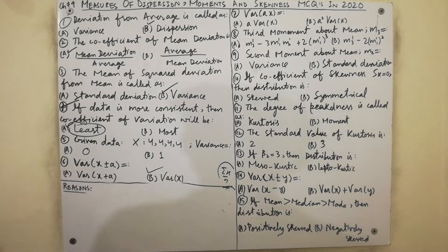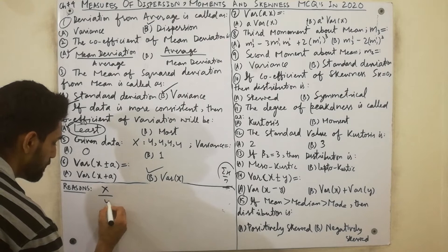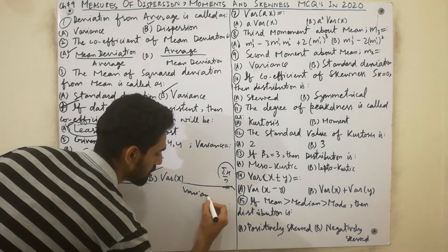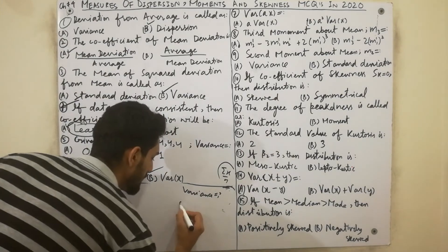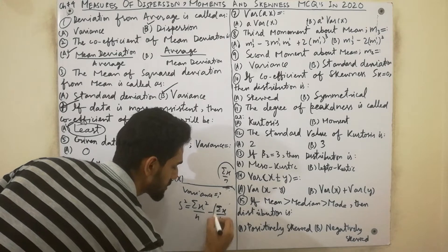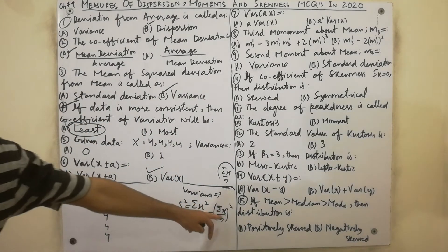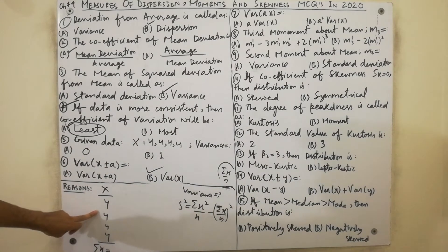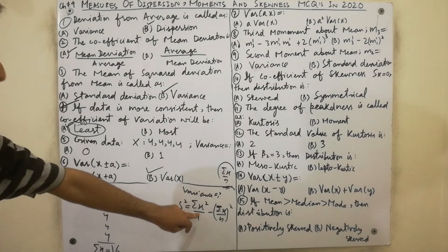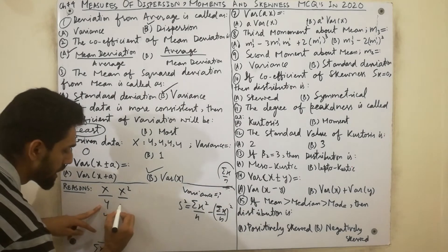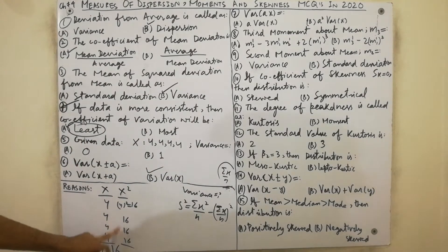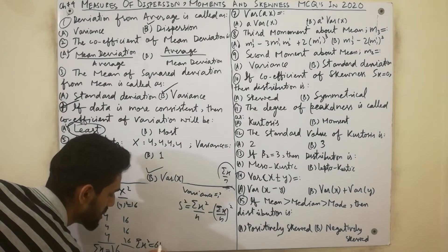MCQ five: given data is 4, 4, 4, 4 — calculate the variance. We use the direct formula: variance equals summation of x-squared divided by n, minus (summation of x over n) squared. Summation of x = 4+4+4+4 = 16. Summation of x-squared = 16+16+16+16 = 64. n = 4.